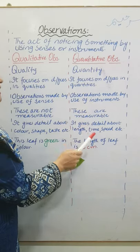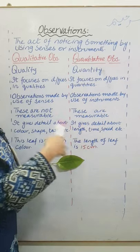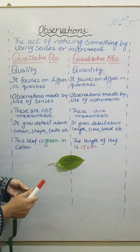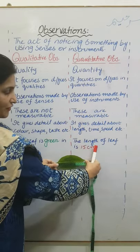More accurate, and these give details about length, time, speed, etc. For example, the length of this leaf is 15 centimeters.